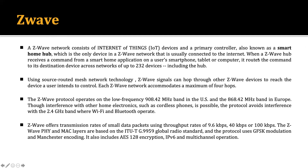The hub is the gateway. The Z-Wave hub receives commands from the smart home application on the user's smartphone, tablet, or computer. It routes commands to destination devices across the network — up to 232 devices including the hub, meaning 231 appliances in the home can be connected to the smart home hub running Z-Wave.